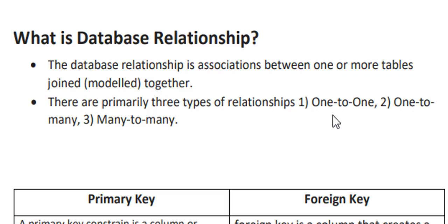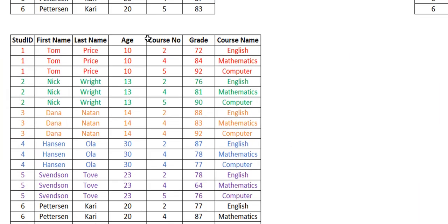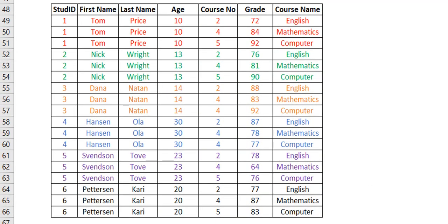With that, we've come to the end of today's video where we went from three tables to a final joined table. You should now be able to identify your primary key, your foreign key, and the type of tables you have in your data model. It's a wrap today — I hope you enjoyed it as much as I did, and until next time, take care of yourself. Bye-bye.